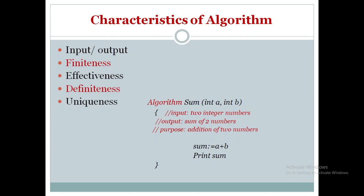The third characteristic is effectiveness. What does effectiveness mean? If I write a statement, it is going to perform its work 100% for sure. For example, the statement 'sum = A + B' will definitely add A and B and store the result in sum. Similarly, 'print sum' will display the content of sum. That is the meaning of effectiveness.